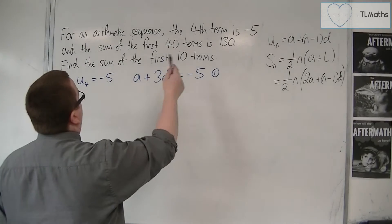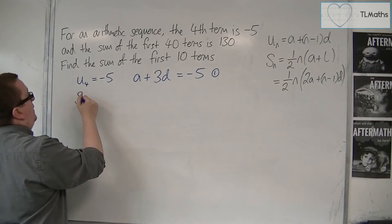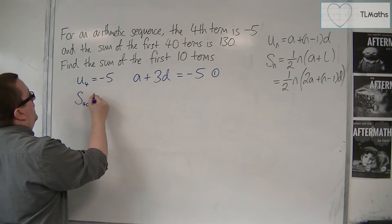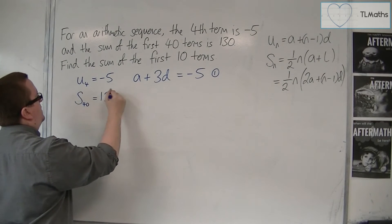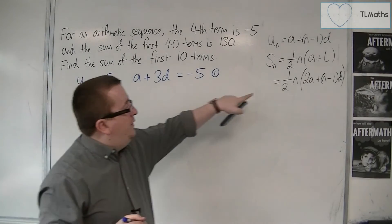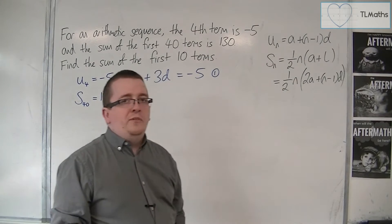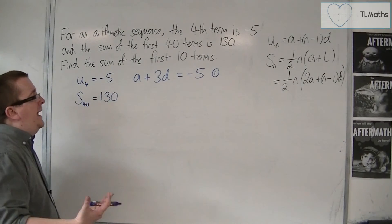I'm then told that the sum of the first 40 terms is 130, so S of 40 is 130. So in order to work with that, I must use this last formula here. Remember, I don't use that one, I don't want it in terms of l, I want it in terms of a and d.